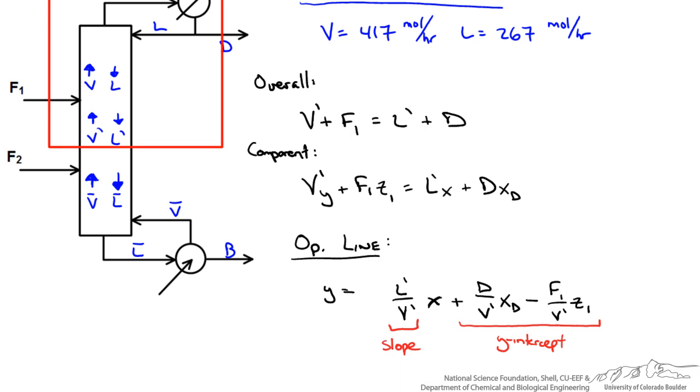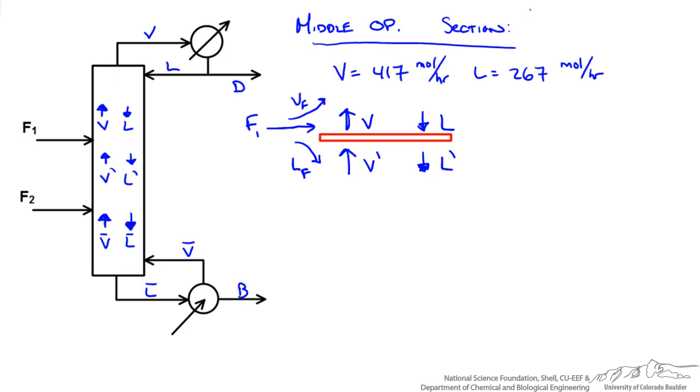To be able to draw this line on our Y-X diagram we would have to know what L prime and V prime are. Since we know V and L and we have information about F we could do a balance around our feed to figure out what these flow rates are in the middle section.